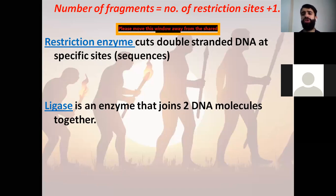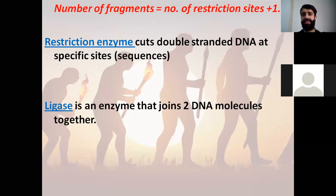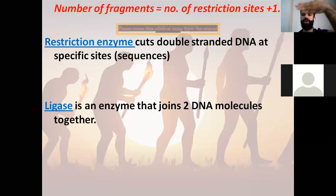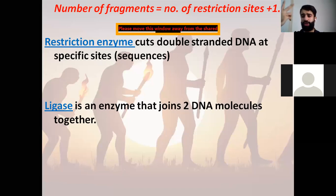Number of fragments: if I want to find out the number of fragments I'm going to cut — for example, if I have a paper and I want to cut it one time, how many pieces will I get? The number of fragments equals the number of restriction sites plus one. So if I cut a paper in only one restriction site, the number of fragments is one plus one — so I get two fragments, two pieces. This equation you have to know in order to solve the exercises.